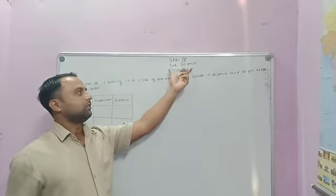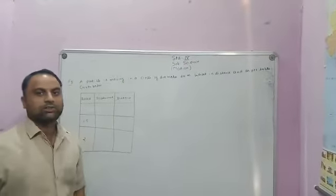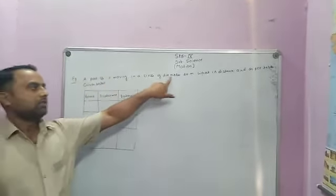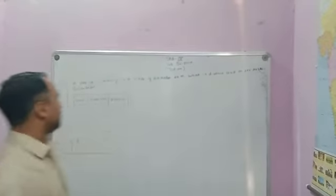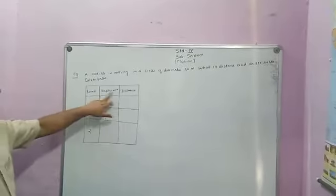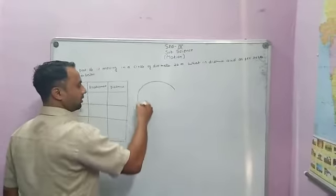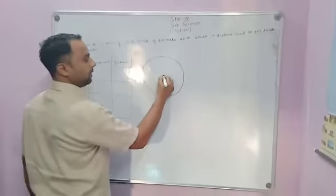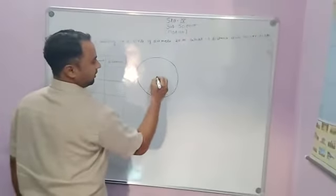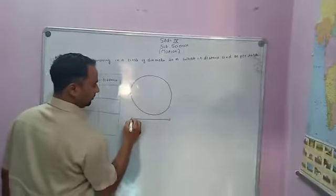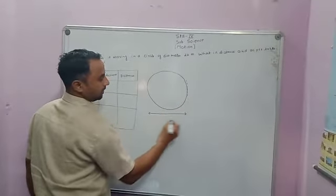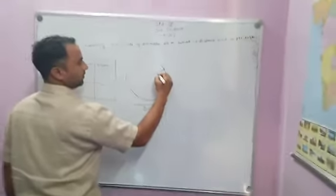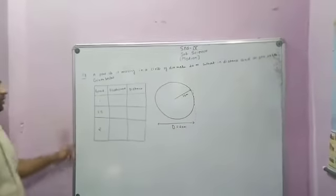In our online classes, we have been discussing the chapter of motion for ninth class. We have to discuss a simple question: a particle is moving in a circle of diameter 20 meters. The diameter d is equal to 20 meters, so the radius of the circle is 10 meters. We need to find the distance and displacement when one round is completed.